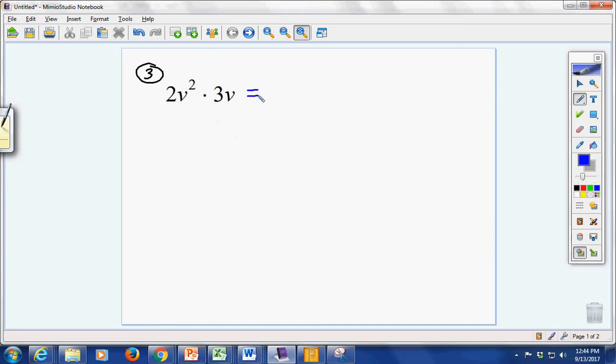So when I'm looking at this one, I'm going to view it all as multiplication. This is 2 times v to the second power times 3 times v to the first power. We do not write the 1, but it's there.